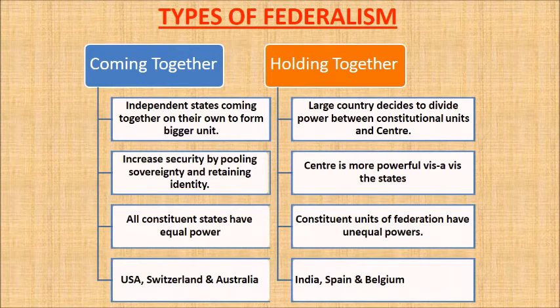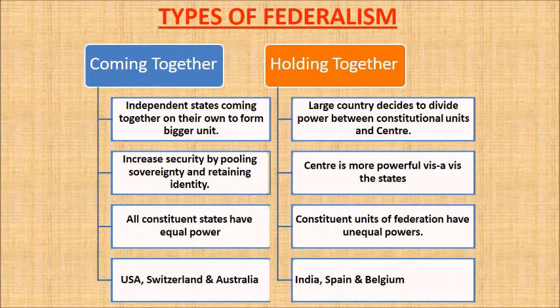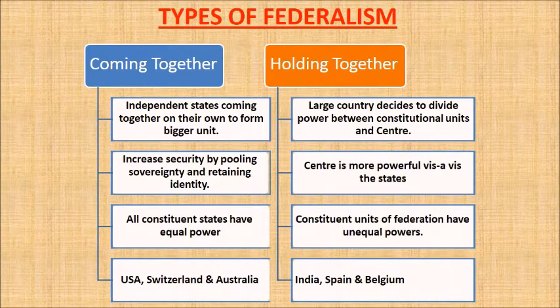Now let's discuss the types of federalism. The exact balance of power between the central and state government varies from one federation to another, and depends mainly on the historical context in which the federation was formed. The first route involves independent states coming together on their own to form a bigger unit, pooling their sovereignty while retaining their identity to increase their security. This type — the 'coming together' federation — includes the USA, Switzerland, and Australia. In this category, all constituent states usually have equal power and are strong vis-à-vis the federal government.